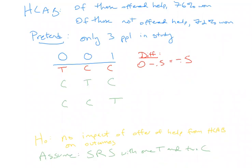We're temporarily assuming that H-Lab offers have no impact whatsoever on outcomes. So I should be able to write down what the difference in means would have been if some other randomization had occurred. Suppose the second person gets treatment and the other two get control — CTC. Under our null hypothesis, the win outcomes would still be 0-0-1. The person with T has outcome zero, and the two Cs have outcomes zero and one, so the difference in means is again negative 0.5.